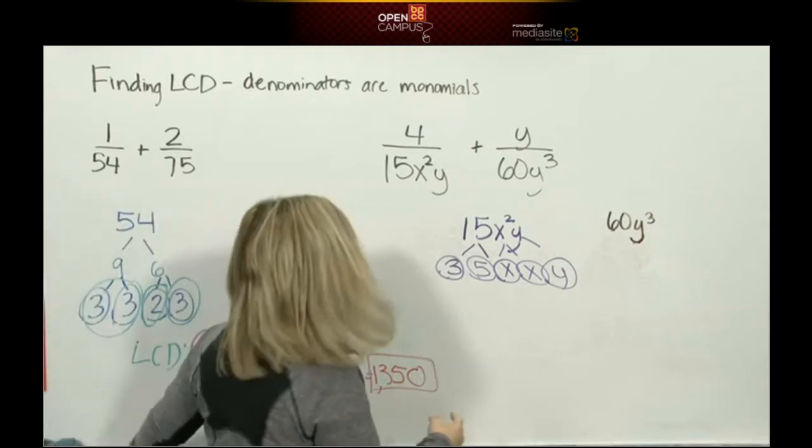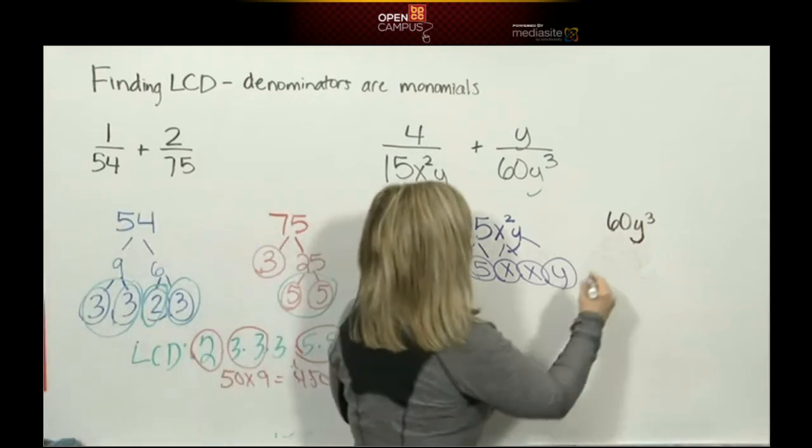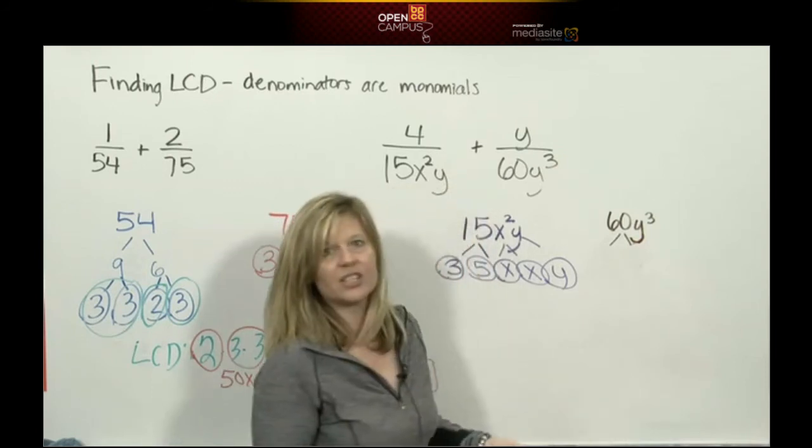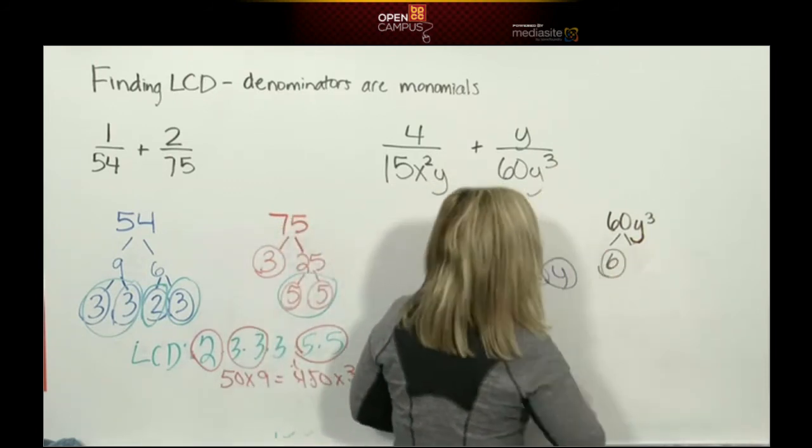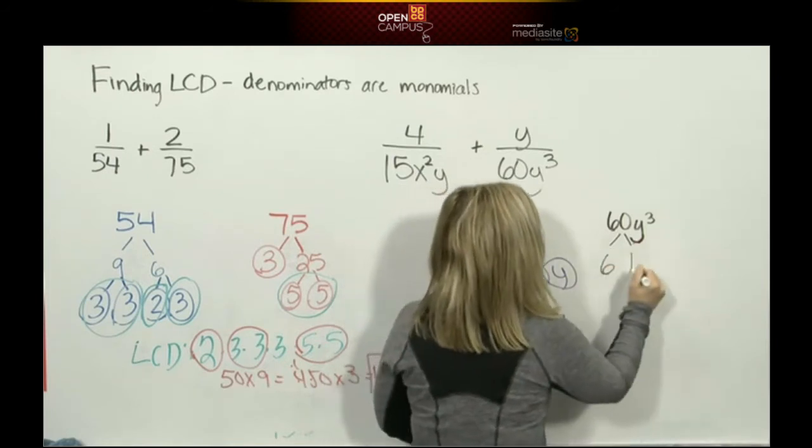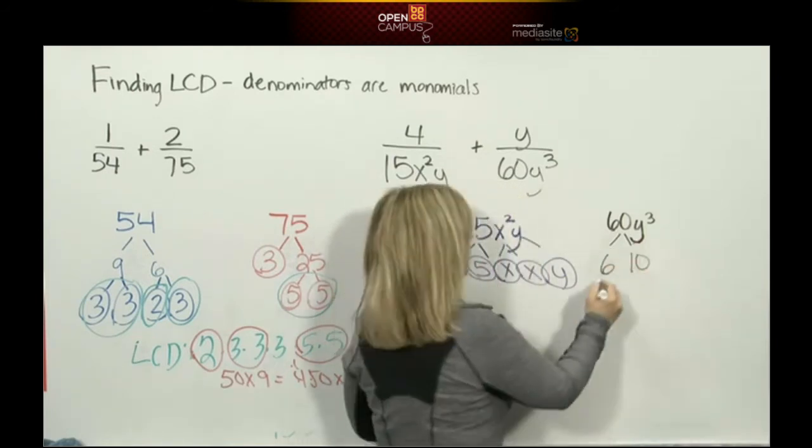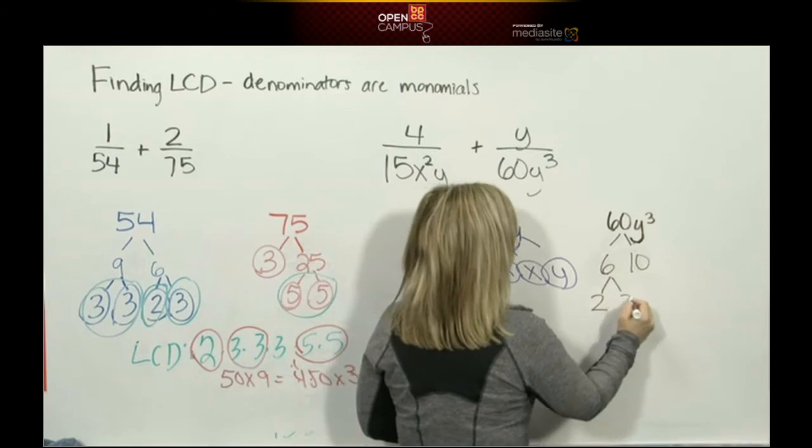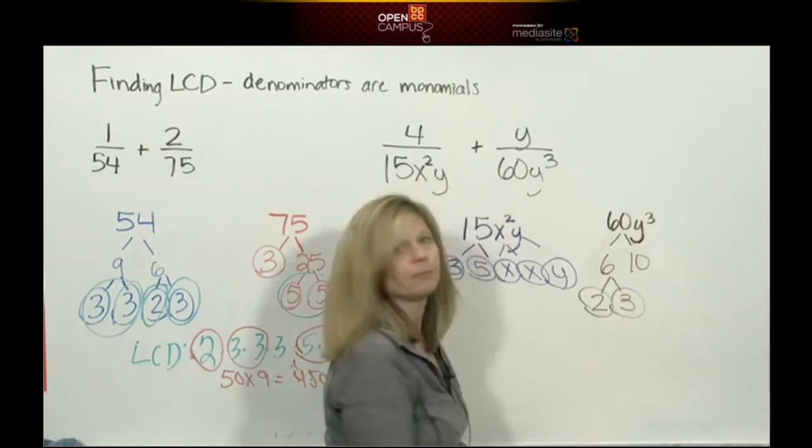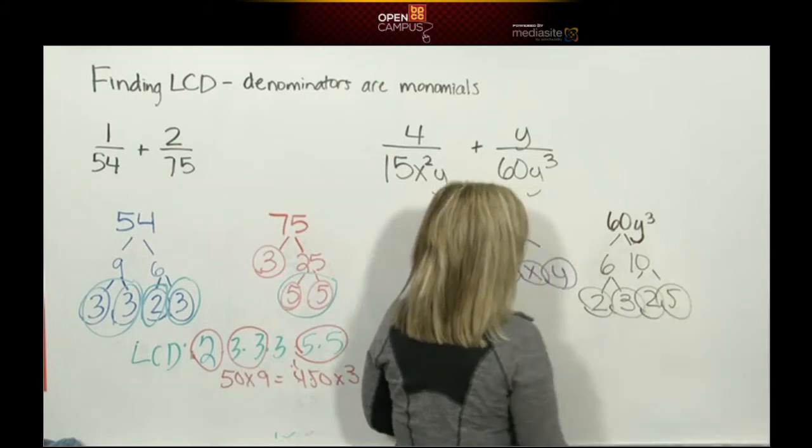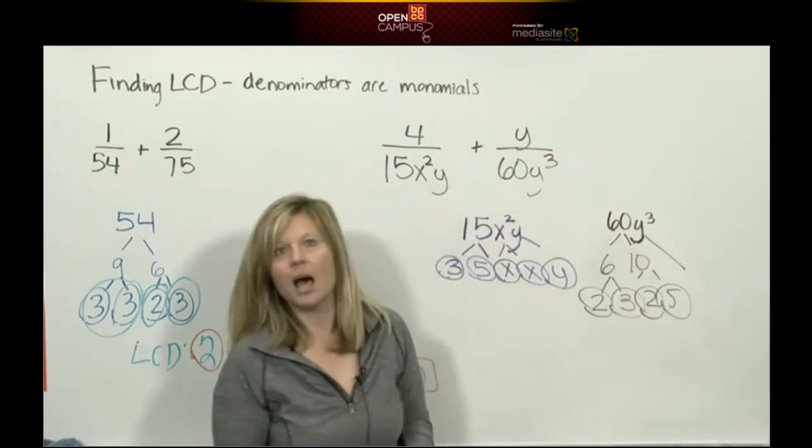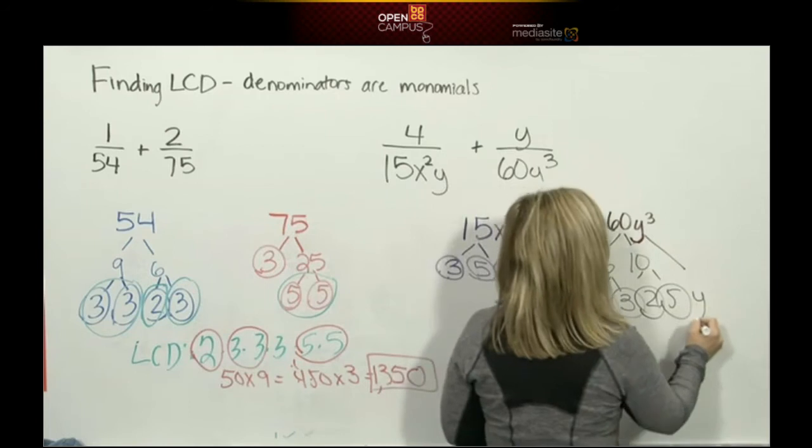Let's do the same thing for 60y³. Off the top of my head for 60, I'm thinking 6 times 10. 6 times 10, neither one of those numbers are prime, so I keep going. 6 is 2 times 3, that's prime. 10 is 2 times 5, that's prime.